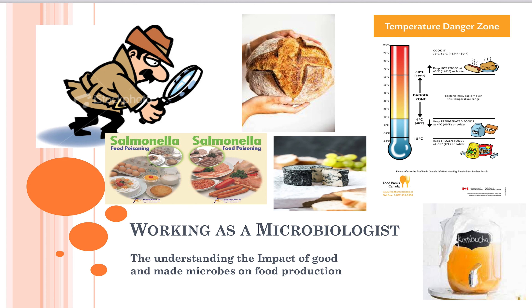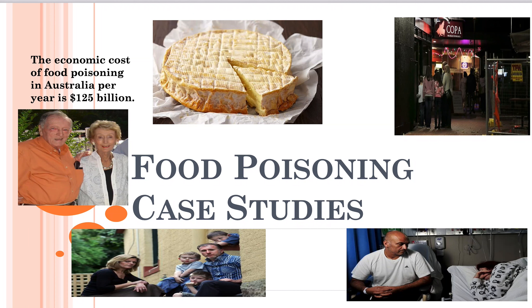That unit involves some station work where we actually prepare a range of foods and look at concepts such as the critical temperature zone and cross-contamination. One of the areas that is very significant in Australia is the incidence of food poisoning. Around 5.5 million people a year suffer from food poisoning, which has a significant economic cost on the Australian economy. We look at how to prepare and store food safely, prevent cross-contamination, and examine some significant and quite alarming food poisoning cases in Australia.